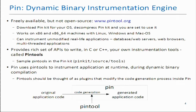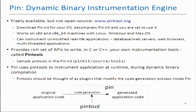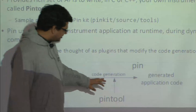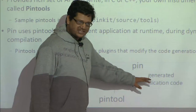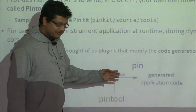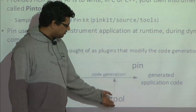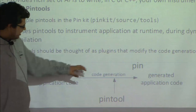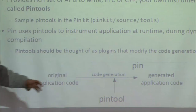PIN reads the original application code and generates code corresponding to it. While doing so, it uses information from the PIN tool to modify this code generation process and inserts extra code as directed by the PIN tool. The PIN tool tells PIN where to insert extra code and what code to insert.